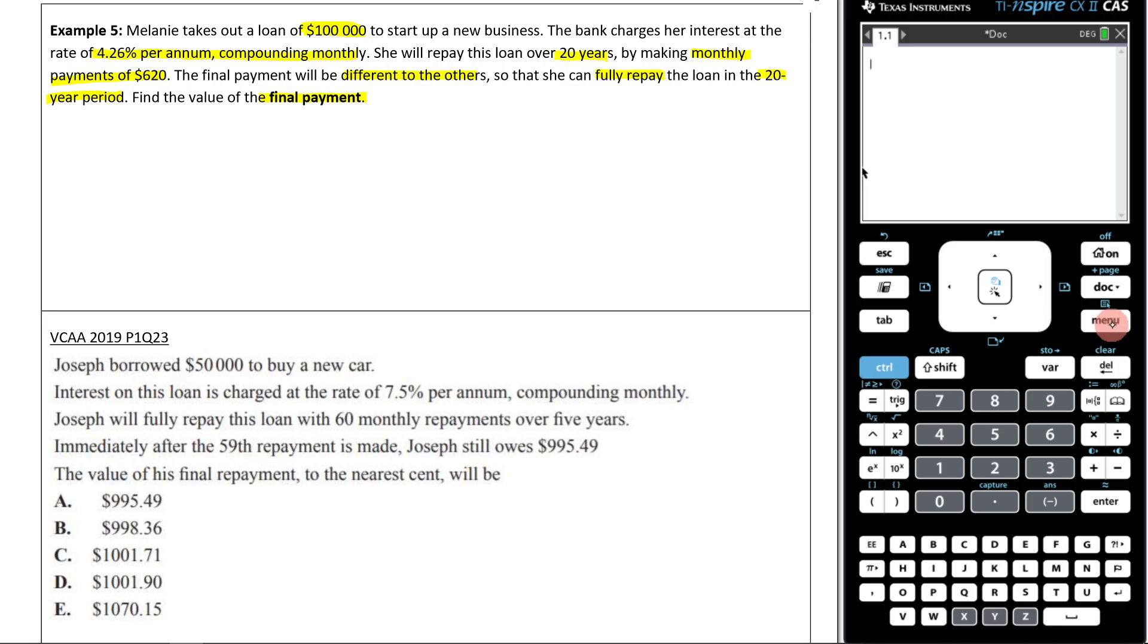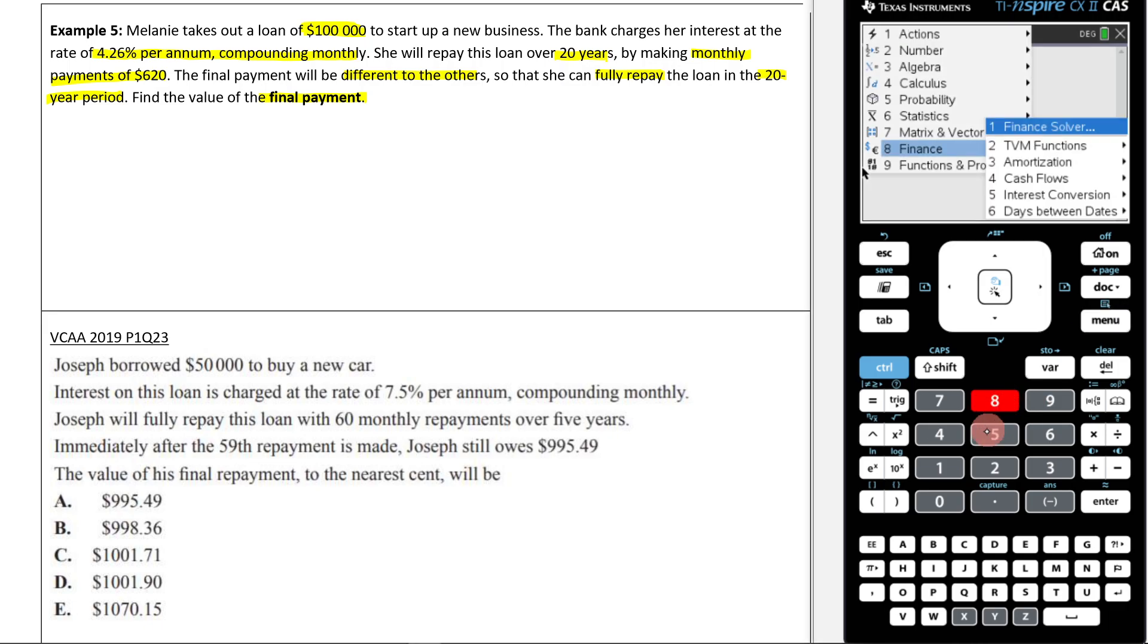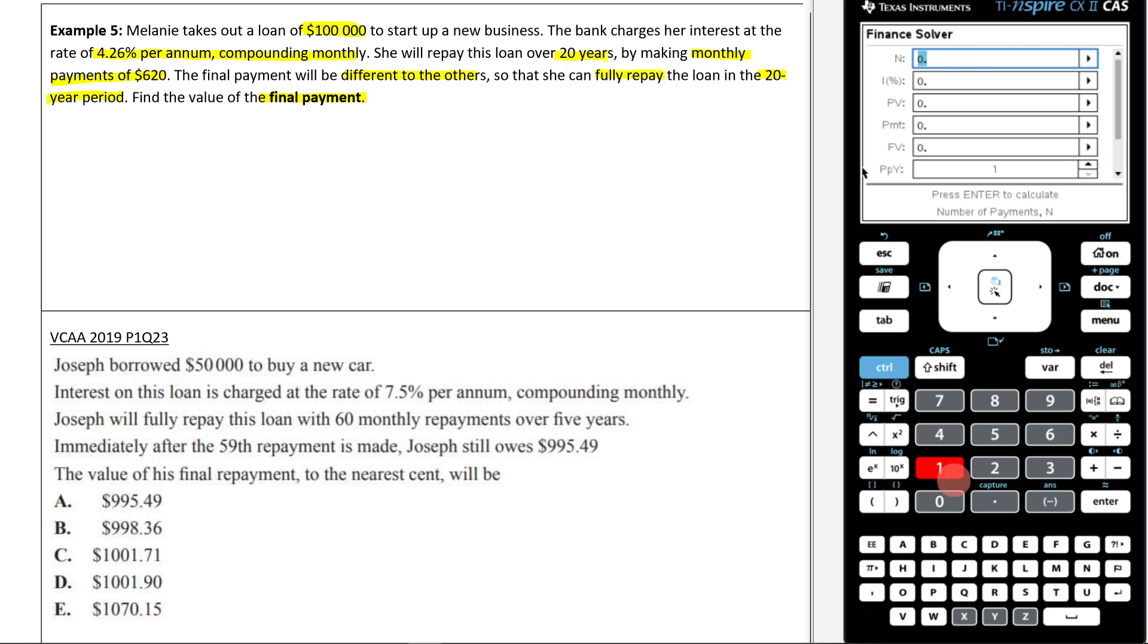So to answer this, we're going to bring up our finance solver, menu 81. Let's now put in the information that we know. We know for the N here that she's paying it off over 20 years, and she's paying it off monthly, so it's going to be 20 times 12, so she's going to make 240 payments. My interest rate is going to be 4.26. My present value of the loan is simply going to be $100,000. And remember, that's positive because the bank is lending it to us. It's money in our pocket. But the payments that I'm going to make is money that I'm giving to the bank, so it's negative. It's money coming out of my pocket, so it's negative $620.